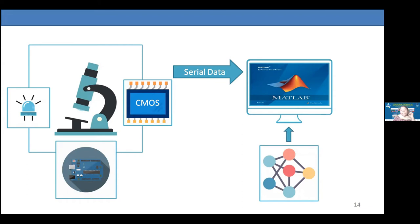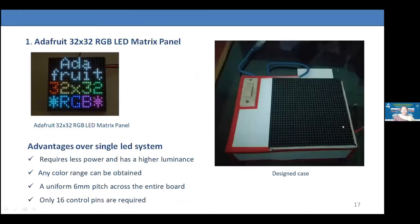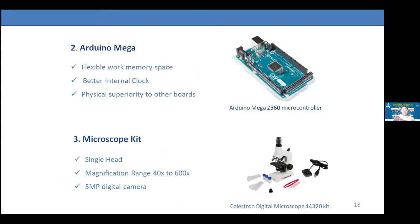Using the latest AI techniques, we diagnose whether malignancy is present in the samples. The hardware setup includes an LED matrix and control circuitry with Arduino. We started with a student-grade Celestron digital microscope. The single LED system requires less power, has higher luminance, any color arrays can be obtained, only a uniform 6 mm pitch across the entire board, and control pins are also fewer.